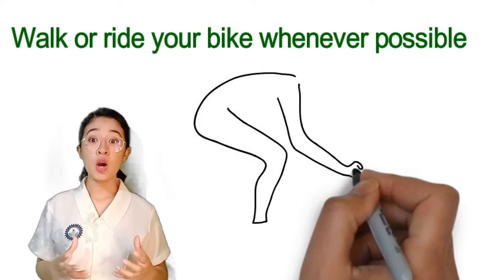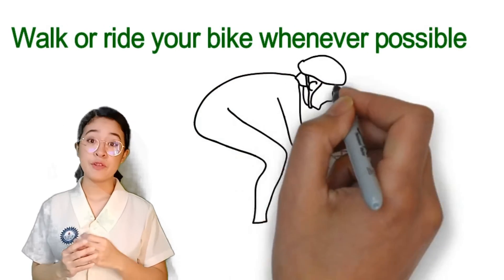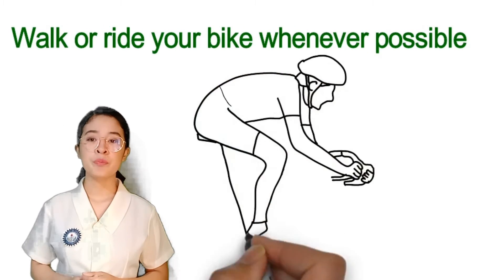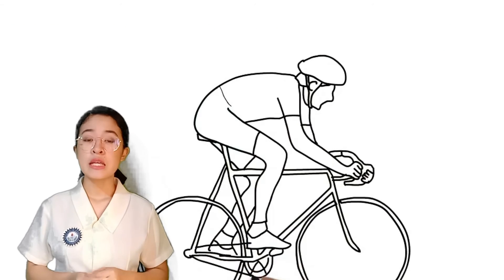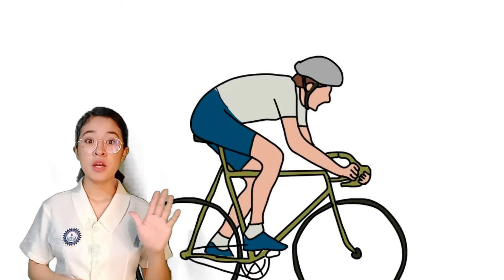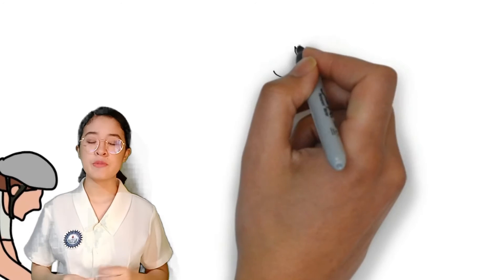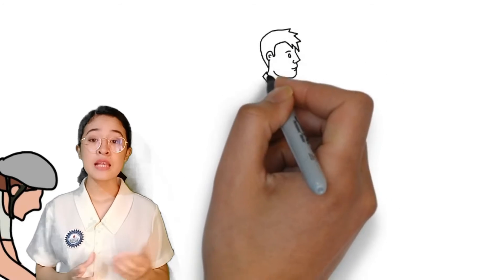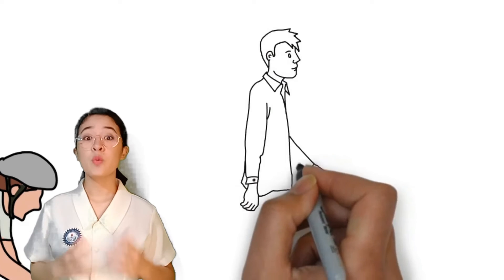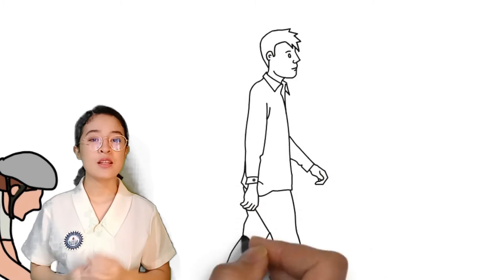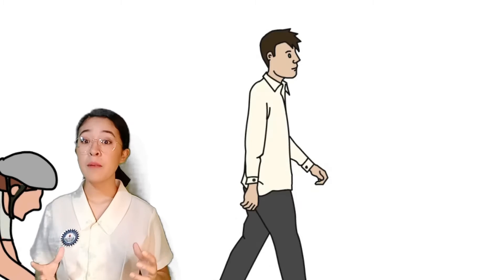First, walk or ride your bike whenever possible. One of the best things you can do to help stop pollution is to stop using your car for short trips. If the weather is nice and you don't have too far to go, consider walking or riding your bicycle. You will help reduce air pollution and you will get some exercise and fresh air in the process.